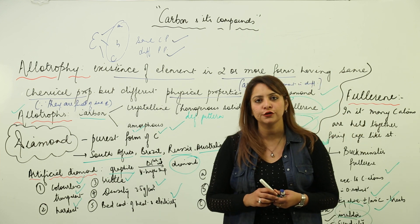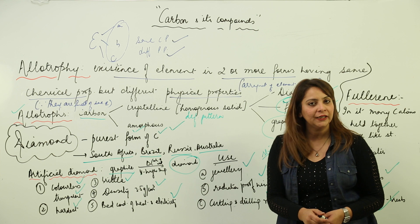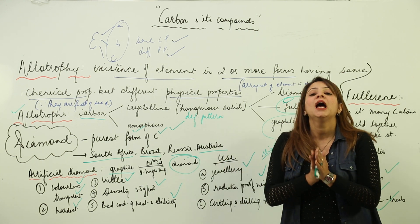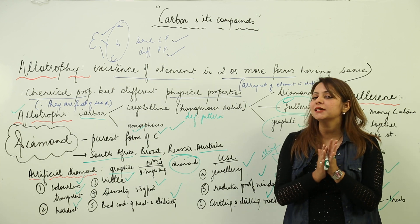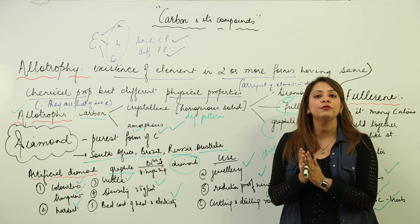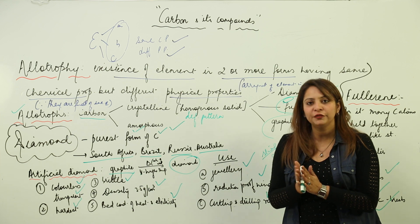So this is about the crystalline allotropic forms of carbon, where you can see that they are homogeneous with regular pattern. Now we are going to study about the amorphous form where we'll see that there is no such regular pattern. So we are going to look on the amorphous allotropes of carbon.